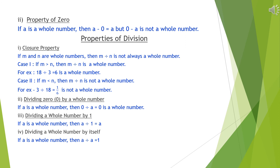Second, dividing zero by a whole number. If a is a whole number, then 0 divided by a equals 0, and 0 is a whole number. Third, dividing a whole number by 1. If a is a whole number, then a divided by 1 equals a. Fourth, dividing a whole number by itself. If a is a whole number, then a divided by a equals 1.